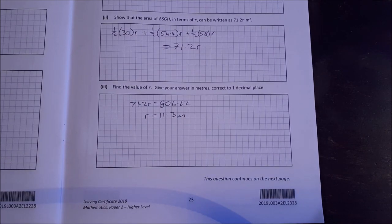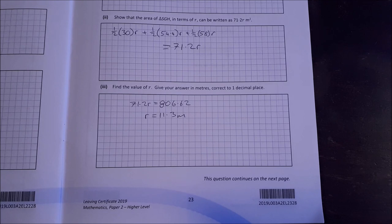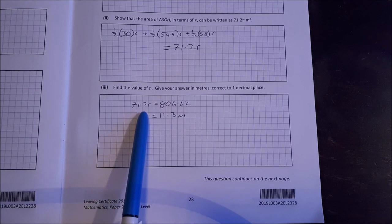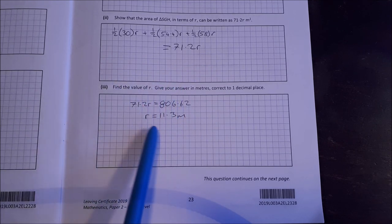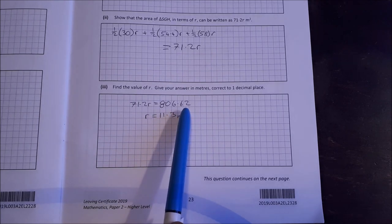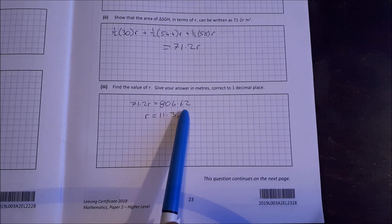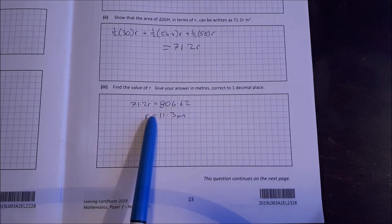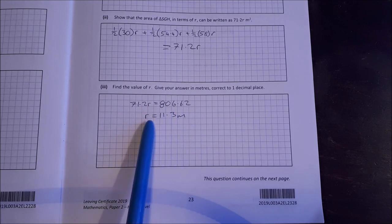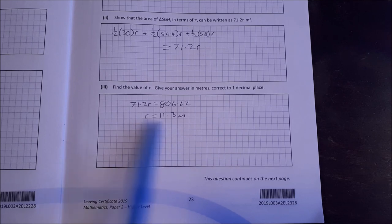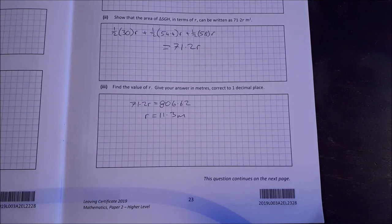Find the value of OR, give your answer in meters, correct to one decimal place. So 71.2 OR from this part is equal to 806.65 from part C. And just work out OR to be 11.3 meters.